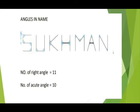Angles in a name — here the name 'Sukhman' is given. You need to identify how many right angles and how many acute angles are in the name. In Sukhman, the number of right angles is 11 and the number of acute angles is 10.